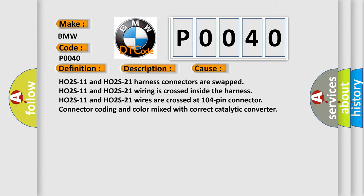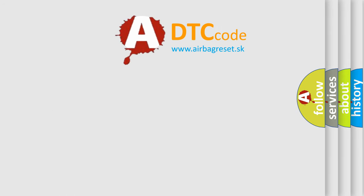H02S11 and H02S21 harness connectors are swapped. H02S11 and H02S21 wiring is crossed inside the harness. H02S11 and H02S21 wires are crossed at 104-pin connector. Connector coding and color mixed with correct catalytic converter. The Airbag Reset website aims to provide information in 52 languages.